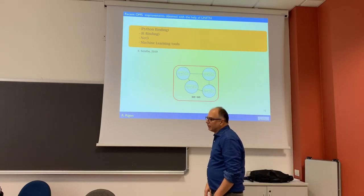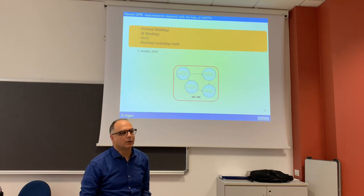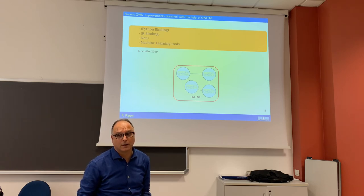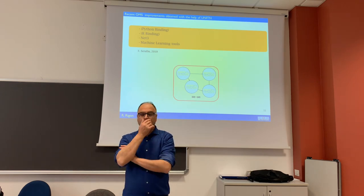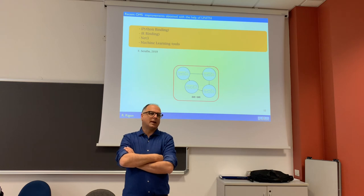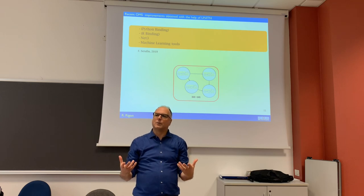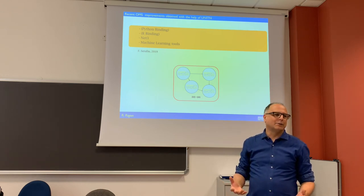Francesco also implemented an artificial neural network inside OMS, meaning you can embed neural network analysis or neural network models. This part is pretty unexploited at this level because he just built it — he graduated last May — so we did not have much time to use it. What he used the artificial neural network for is what he called surrogate models: you can do simplified models, but when you have a lot of processes the model still remains too complicated for final users.